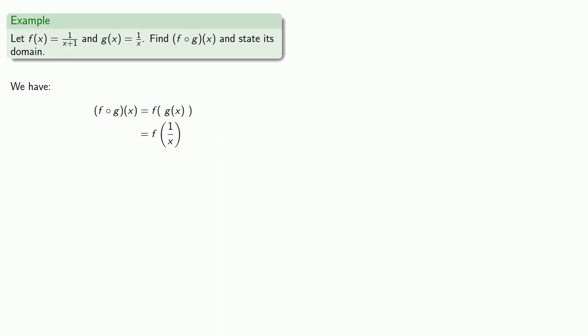We know that f of x is 1 over x plus 1. But if we want to say anything about the composite function, what we want to do is drop every occurrence of x and replace it with an empty set of parentheses. And because paper is cheap, we'll copy that down.